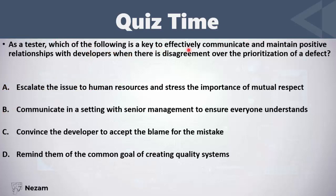As a tester, which of the following is a key to effectively communicate and maintain positive relationships with developers when there is a disagreement over the prioritization of a defect? Escalate the issue to human resources and stress the importance of mutual respect? Communicate in a setting within your management? Convince the developer to accept the blame for the mistake? Or remind them of the common goal of creating quality systems? Of course, you should remind everyone of your goal of creating quality systems.